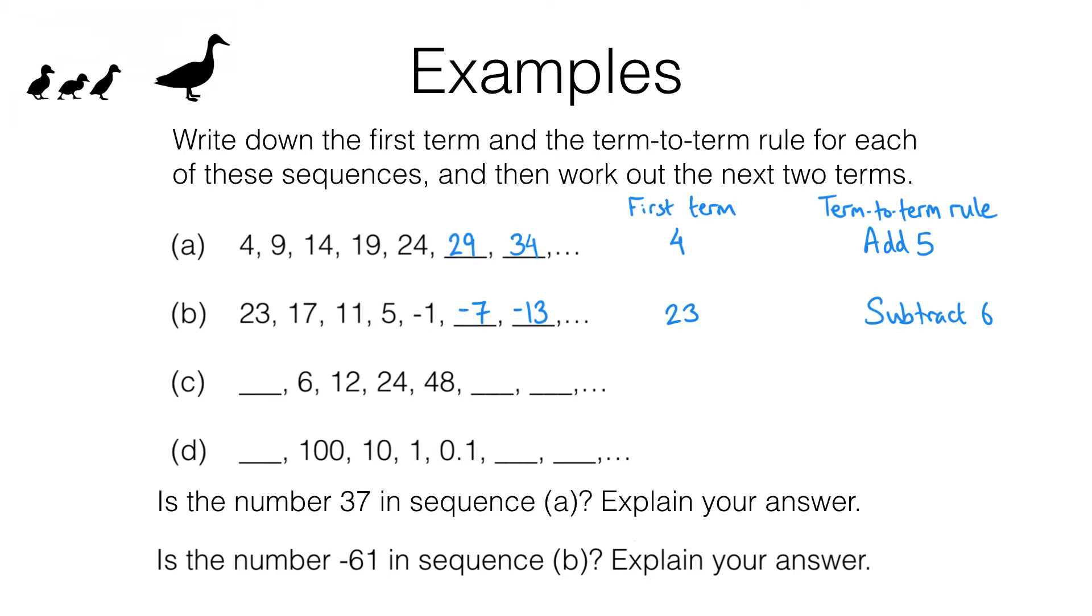In fact what we're doing is multiplying by a particular number. Can you see what we're multiplying by? Hopefully you've spotted that we are multiplying by 2. I can see that 6 times 2 is 12, 12 times 2 is 24, 24 times 2 is 48. So I can use that to find the next two terms. 48 times 2 is 96 and 96 times 2 is 192.